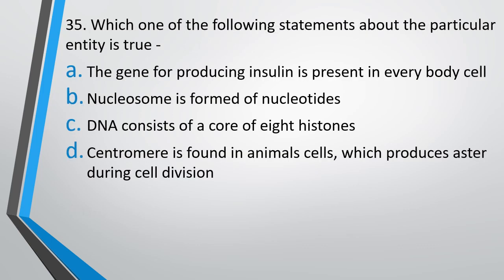Question number 35. Which one of the following statements about a particular entity is true? Gene for producing insulin is present in every body cell; nucleosome is formed of nucleotides; DNA consists of a core of 8 histones; centromere is found in animal cells which produces aster during cell division. The correct answer is option A — gene for producing insulin is present in every body cell.